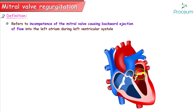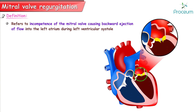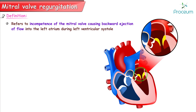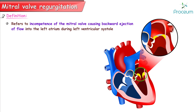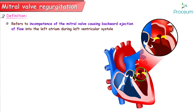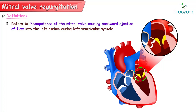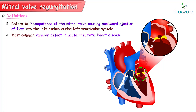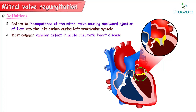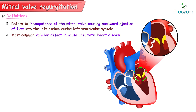Mitral valve regurgitation and insufficiency. Mitral valve regurgitation refers to incompetence of the mitral valve causing backward ejection of flow into the left atrium during ventricular systole. It is the most common valvular defect in acute rheumatic heart disease.